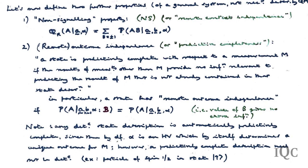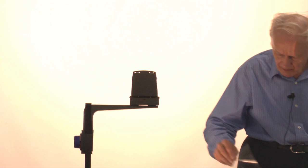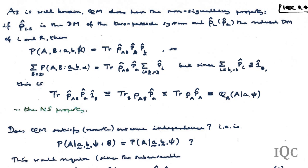Notice that any deterministic state description is automatically predictably complete because then by definition alpha is a hidden variable which by itself determines any outcome for the measurement. However, the converse is not necessarily the case — a predictably complete description need not necessarily be deterministic. For example, Ballentine and Jarrett give this example: a single particle of spin one-half in the quantum state 'up'. That's not deterministic — it does not uniquely specify the outcome of a measurement in a different direction. On the other hand, there is no other information you could possibly use to narrow that down. So that is a case of predictive completeness without determinism. We certainly know that quantum mechanics has the non-signaling property, and it's pretty trivial to establish that by standard manipulations with the density matrix.